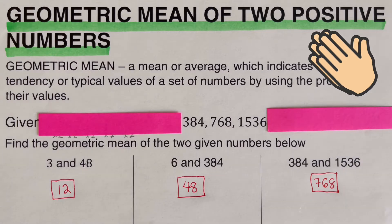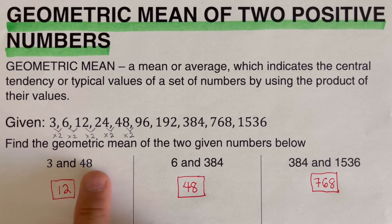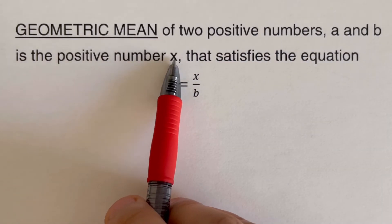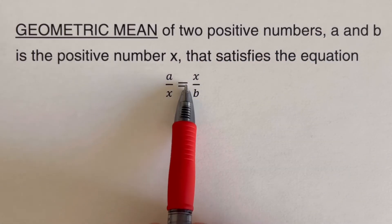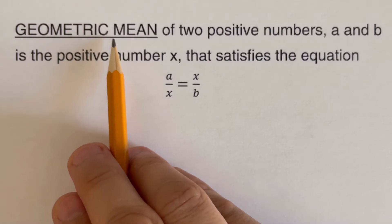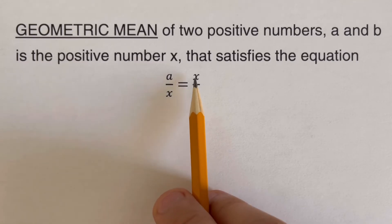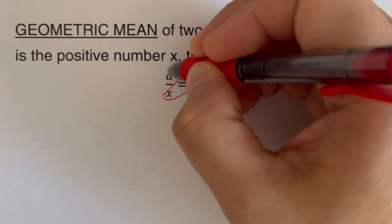What happens if we are not given a geometric sequence but need to determine the geometric mean between two numbers? The geometric mean of two positive numbers a and b is the positive number x that satisfies the equation: a over x equals x over b. Here a and b are the two positive numbers, and x is the geometric mean.